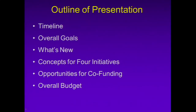I'd like to give now just a real brief outline for my presentation. I'm going to review the timeline for these initiatives, discuss the overall goals, really pull out what we think is new from what's been currently done under ENCODE, then briefly describe each of the concepts, identify some opportunities we think there are for co-funding, and then describe the overall budget. And after that, council can discuss and vote on each individual concept.